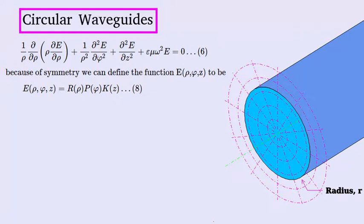I'll just rewrite this equation up at the top of the screen here. We can define E to be made up of these three equations multiplied together. We say that this equation is variable separable because the functions of these variables can be separated out into their own functions. This is because the waveguide can be described symmetrically in cylindrical coordinates.